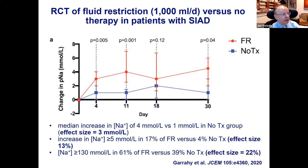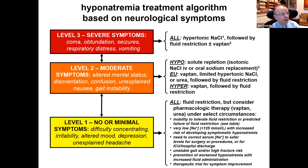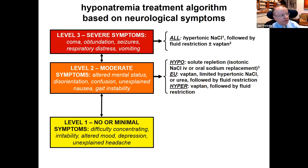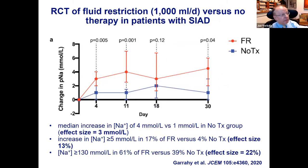Reaching 130 mmol/L occurred in 61 percent with fluid restriction versus 40 percent without — an effect size of only about 21 percent. Fluid restriction can work, but use it in patients you predict will respond. Don't continue it beyond 24 to 48 hours if there is no response, because essentially all the correction seen in trials occurred within the first two days. If it doesn't work early, move on to more effective therapies promptly.